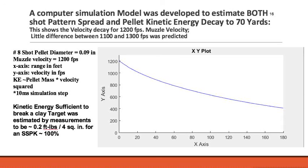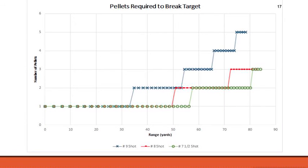The larger shot load means higher muzzle velocity but also more recoil — a sorer shoulder — without much benefit. We found that the kinetic energy needed to break a clay target is about 0.2 foot-pounds per 4-square-inch area for a 100% probability of kill. Comparing this kill energy to different shot sizes produces a graph of distance traveled versus the number of pellets needed to break the disc. The blue graph shows number 9 shot, red shows number 8, and green shows number 7.5, giving you a guide for choosing pellet size based on how far away the disc will be.